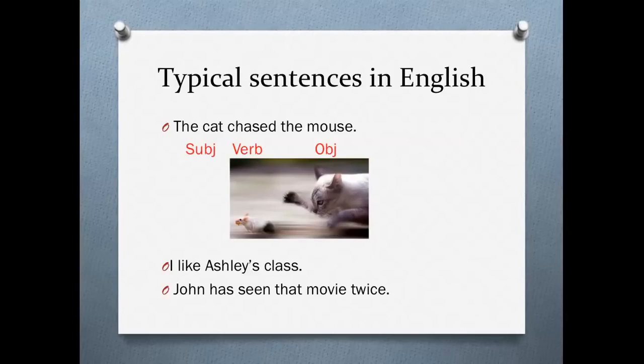Other examples of sentences like this in English: I like Ashley's class. The subject is I, the verb is like, and the object is Ashley's class. Ashley's class does nothing — I do something. John has seen that movie twice. John is the subject, has seen is the verb, that movie is the object. That movie does nothing. It is John who does something. The movie doesn't do anything.